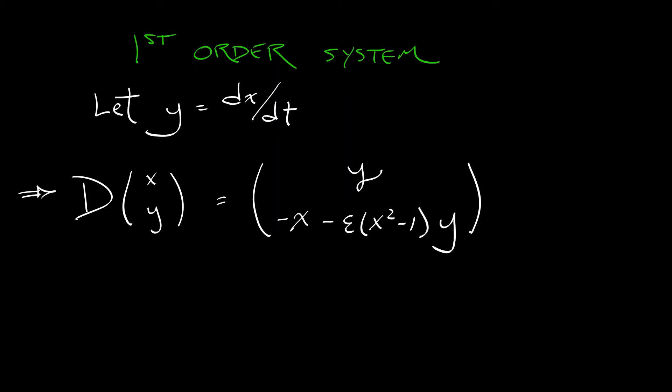All right, so let's do what we do and write this out as a first order system. We're going to let y be equal to dx dt. And then the derivative of the vector x y is really what? Well, the derivative of x is y. The derivative of y is the second derivative of x, which is minus x minus epsilon times quantity x squared minus one times y.